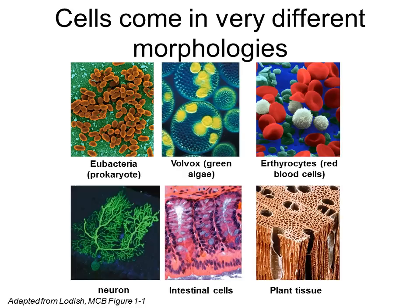Cells come in very different morphologies. We can have small bacillus-like cells, like the ones shown here in bacteria. We can also have small colonies of cells, like the volvox. Red blood cells — their function is directly related to their shape, their donut shape. Neurons also have functions directly related to their structure.